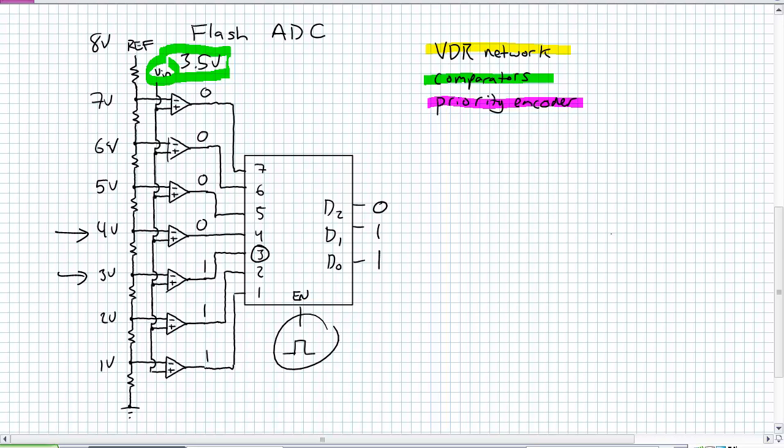So how do we increase the resolution of something like this? The answer is obviously use a priority encoder that has more bits, perhaps a 4-bit priority encoder. But be aware, as you have a 4-bit priority encoder, you're going to have to have that many more comparators. This is one major disadvantage. To increase the resolution, we're going to have to add double the amount of comparators just because we added one more bit position.